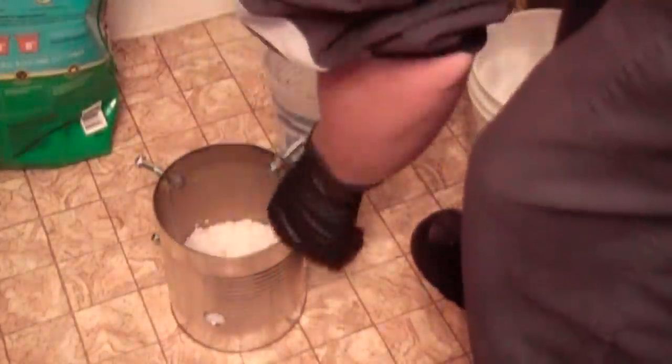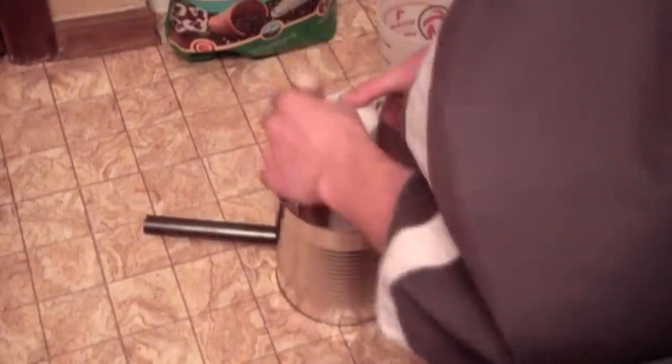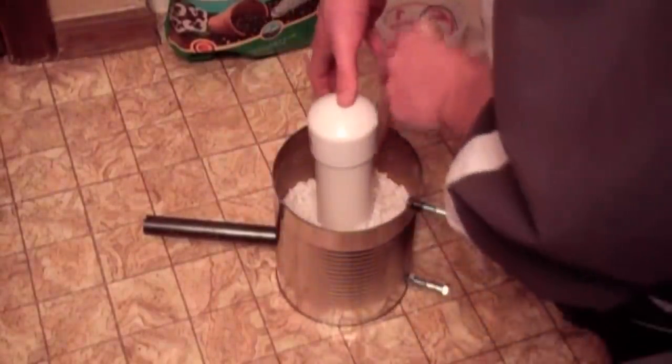I prepare another batch for the walls. With the center form and the burner form in place, I ram up the sides of the forge.